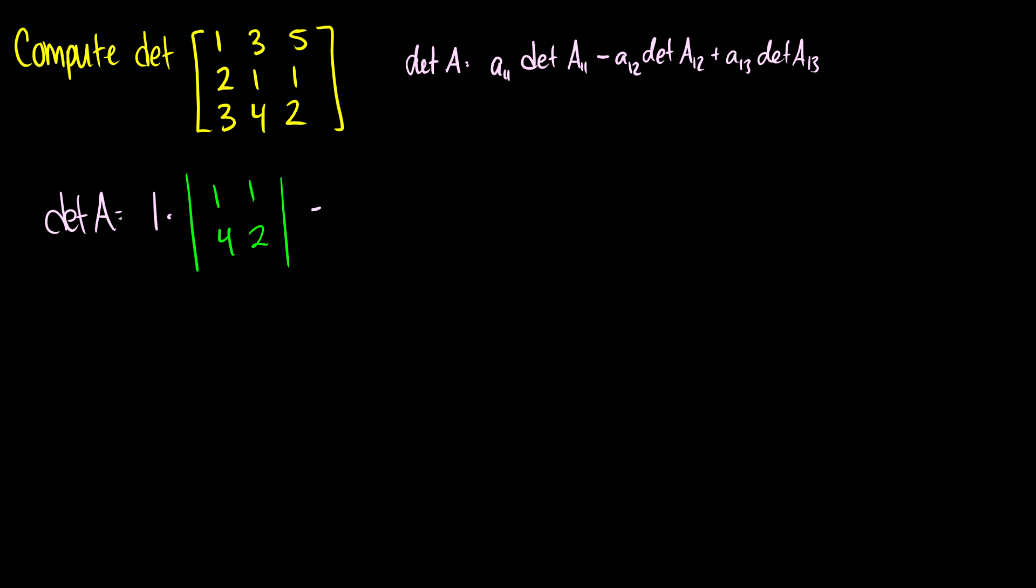Then we have to subtract A12, which is 3 times the determinant of capital A12. So that's taking out the first row and the second column. So we're going to be left with [2, 1; 3, 2].